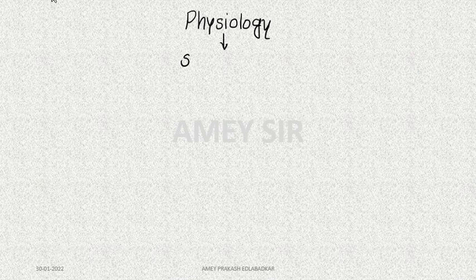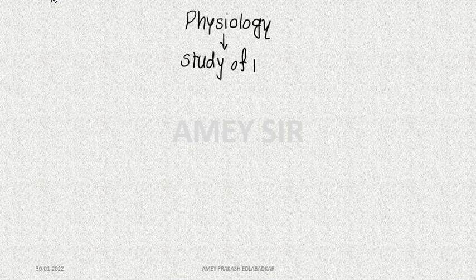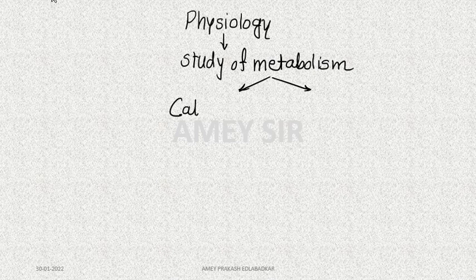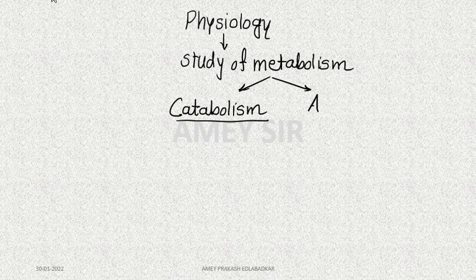Photosynthesis is a physiological process, and physiology includes the study of metabolic reactions — the study of metabolism. This metabolism is of two types: one is catabolism and the other is anabolism.